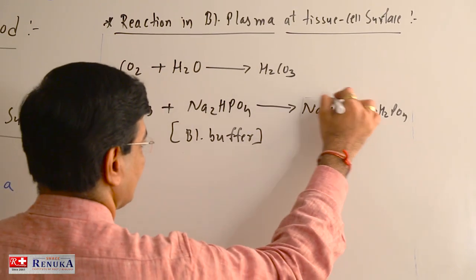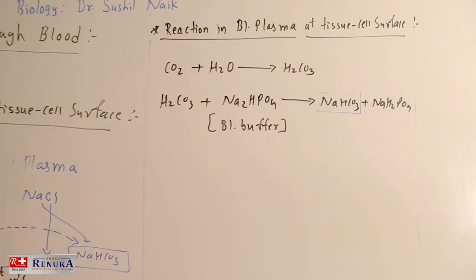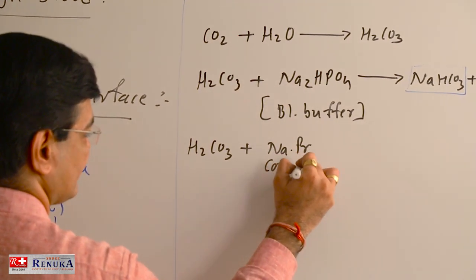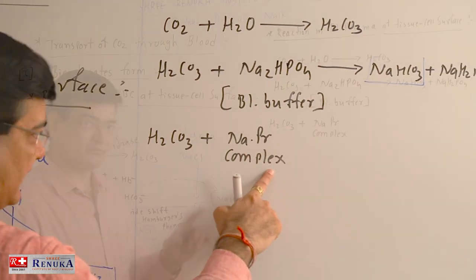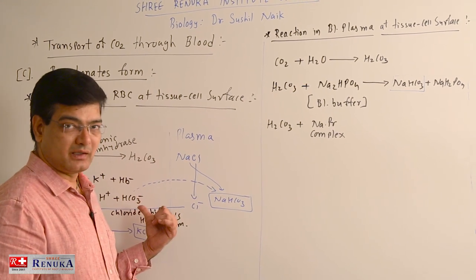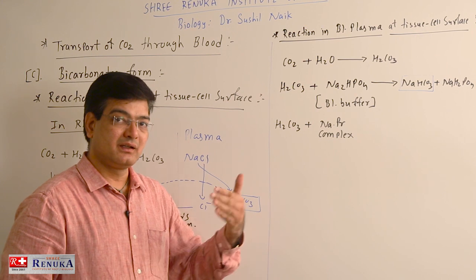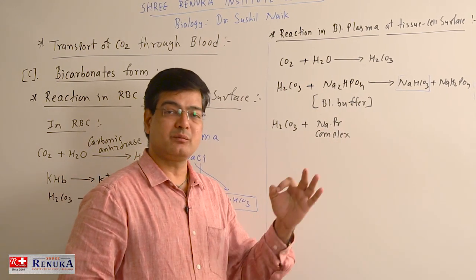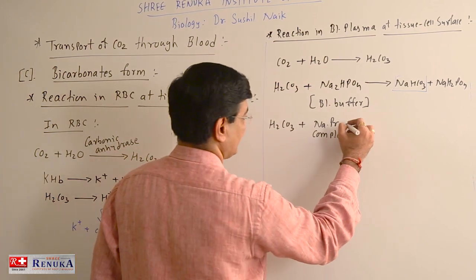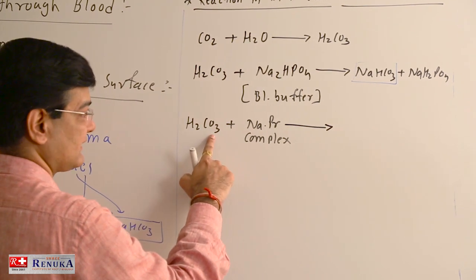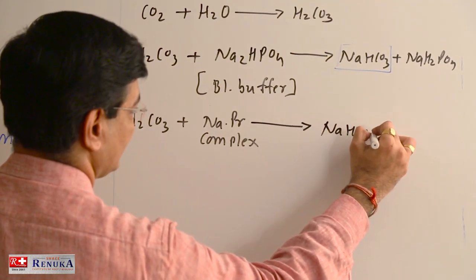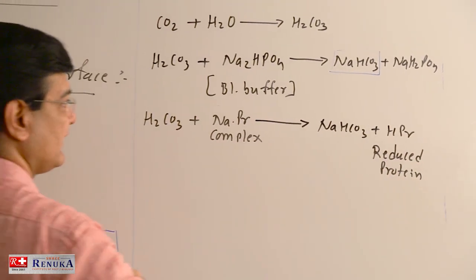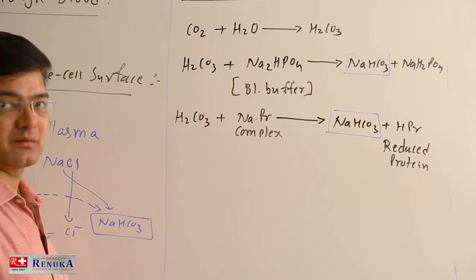Again, NaHCO3 (sodium bicarbonate) forms in the blood plasma. Some amount of H2CO3 also reacts with the sodium protein complex present in the blood plasma. During the transport of Cl- into the RBC, a certain amount of Na+ remains in the blood plasma before reacting with HCO3-. Some Na+ reacts with plasma proteins to form a sodium protein complex, which also acts as a buffer and maintains pH by reacting with H2CO3 to form NaHCO3 and a reduced protein (HPr). This way, NaHCO3 again forms inside the blood plasma.